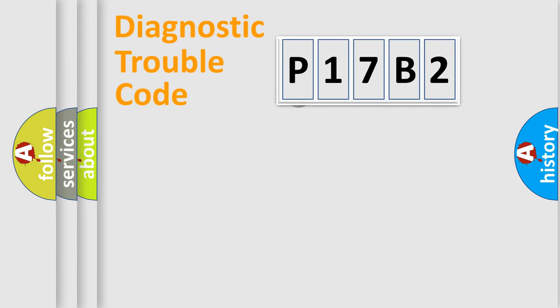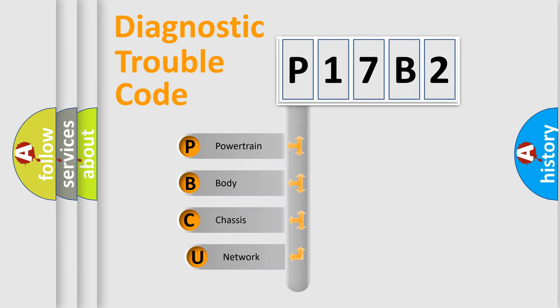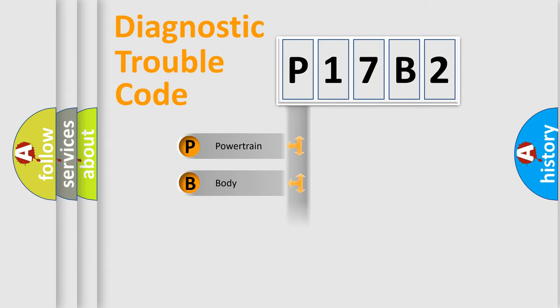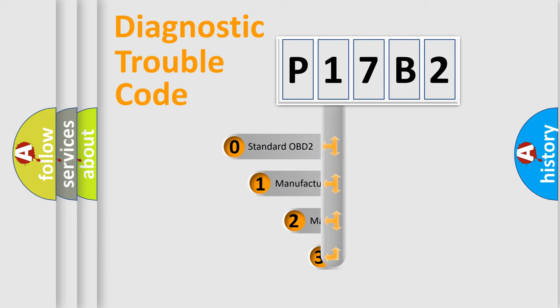First, let's look at the history of diagnostic fault code composition according to the OBD2 protocol. We divide the electric system of an automobile into four basic units: Powertrain, Body, Chassis, and Network. This distribution is defined in the first character of the code.